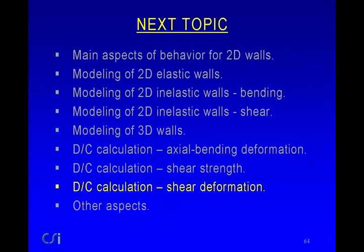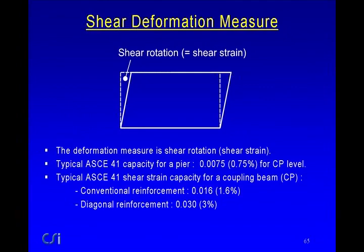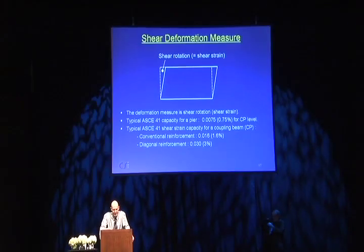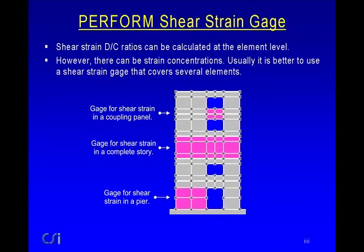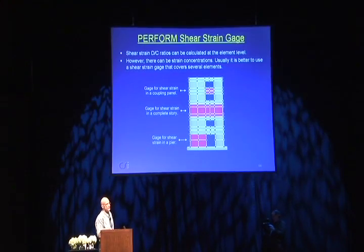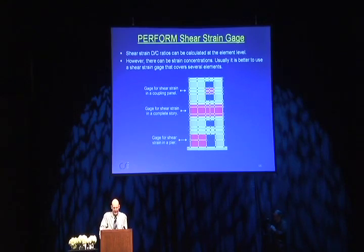Moving on to shear deformation: in ASCE 41 this is called 'shear rotation' — which is really the shear strain. Typical ASCE 41 capacity for a pier is about 0.75% for collapse prevention; for a coupling beam with conventional reinforcement about 1.6%, and with diagonal reinforcement about 3%. It's not a good idea to look at shear strain in individual elements due to shear strain concentrations. It's better to use a shear strain gauge plastered over a complete beam or story.